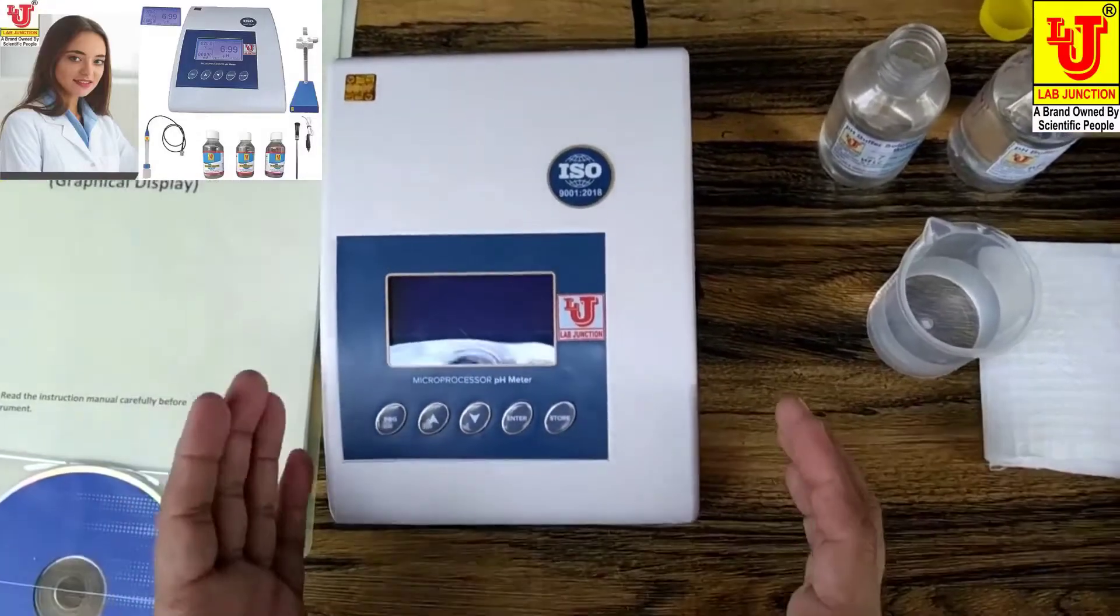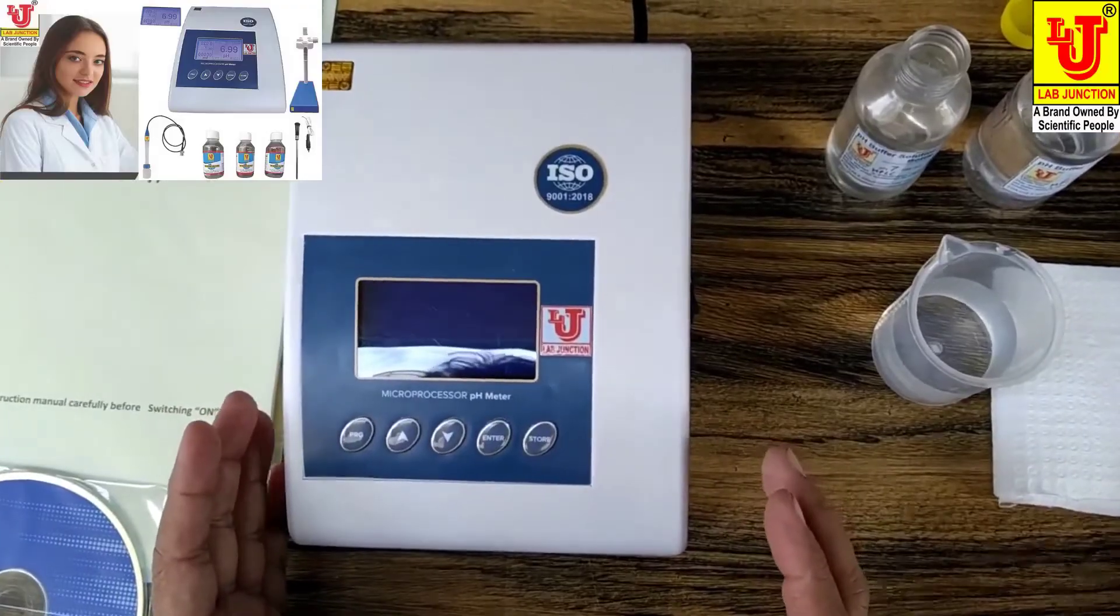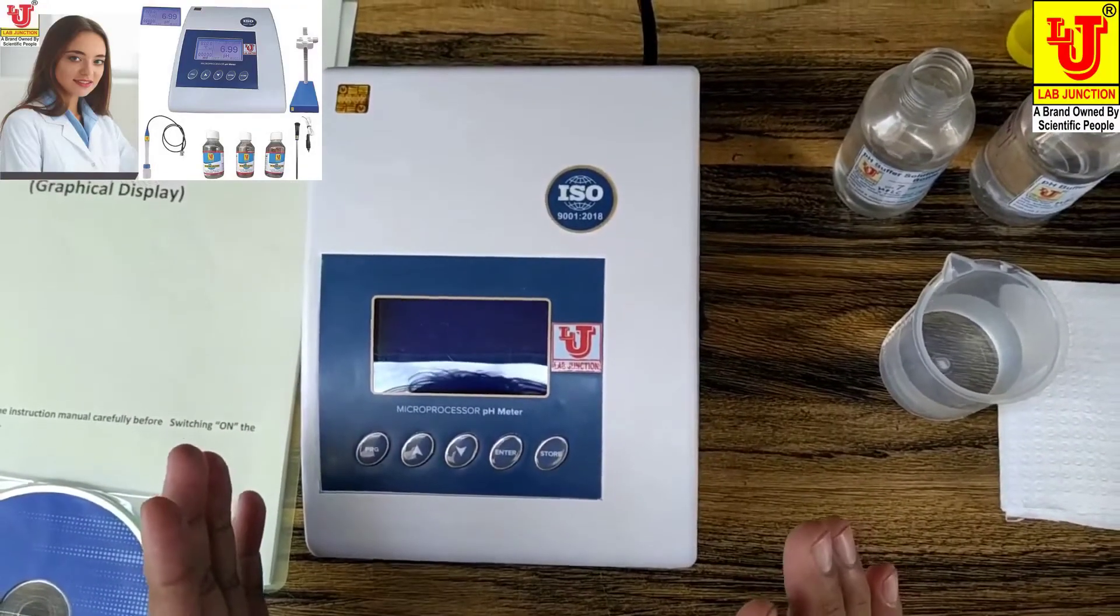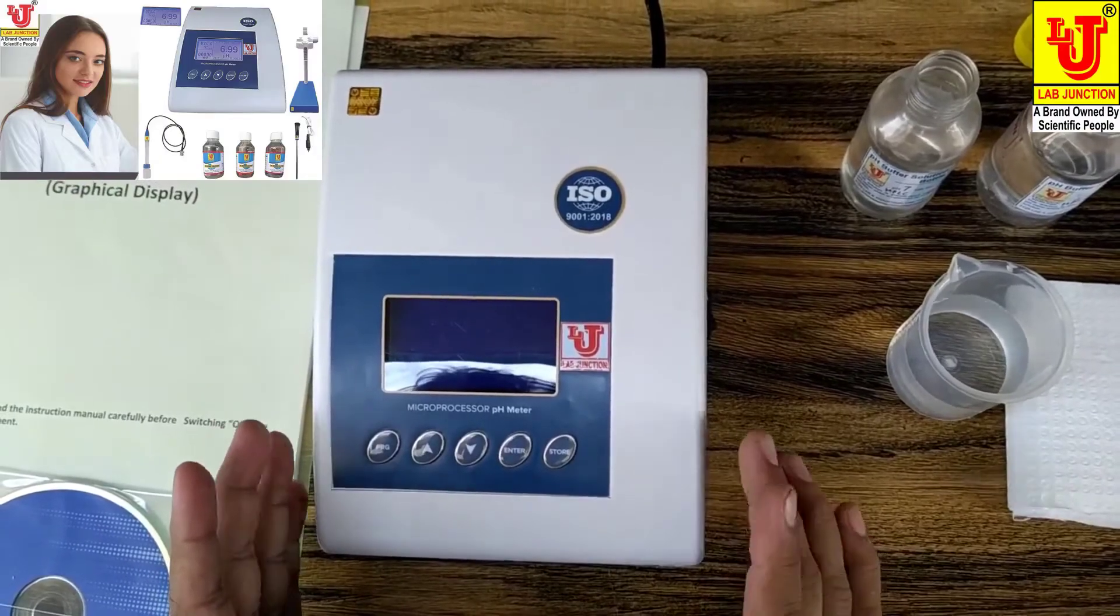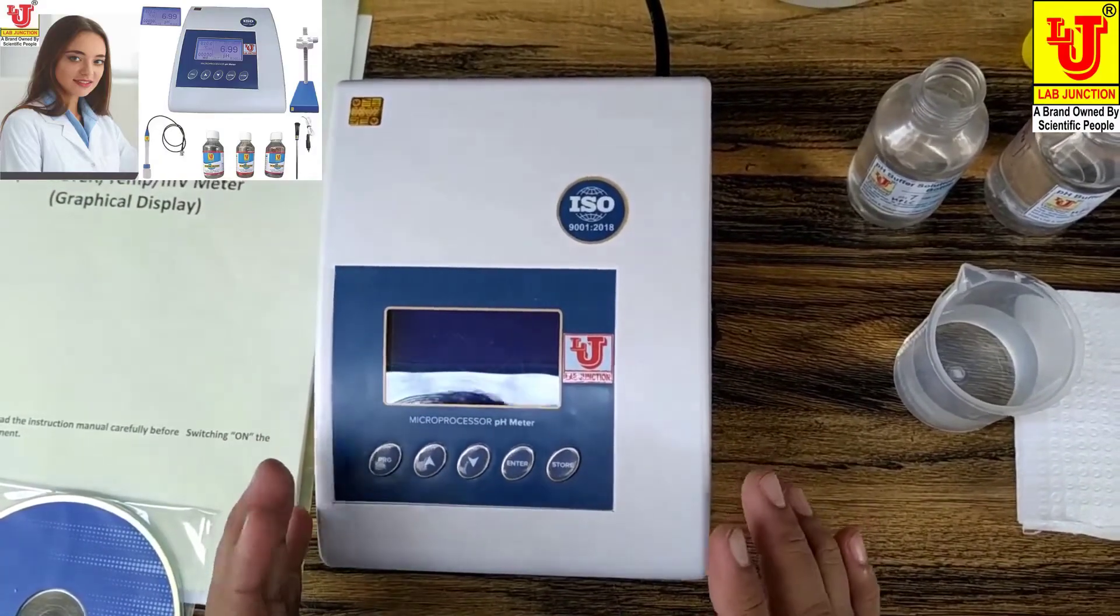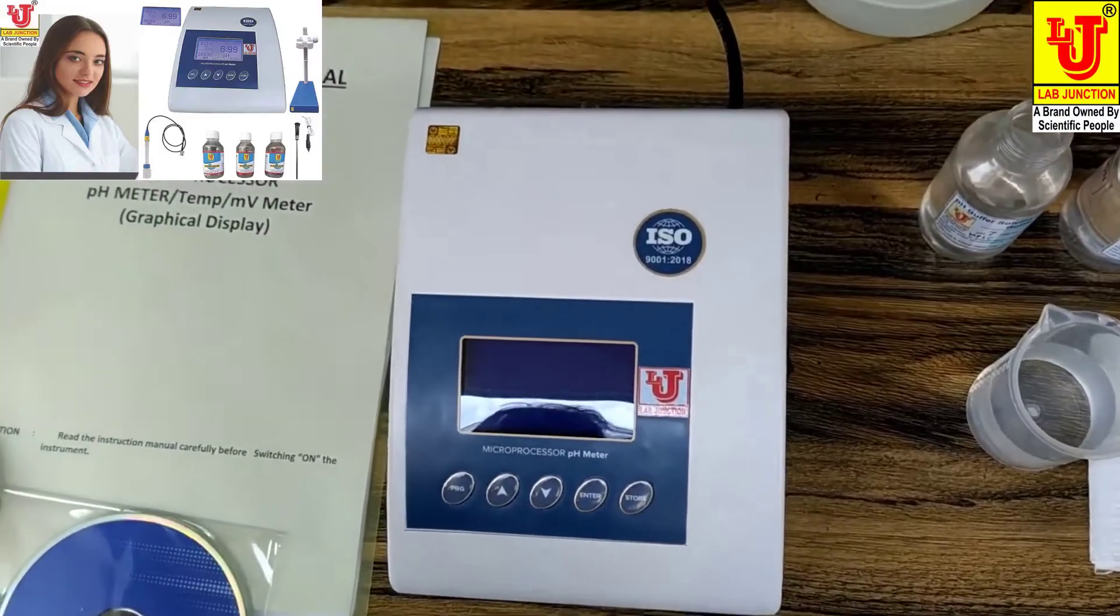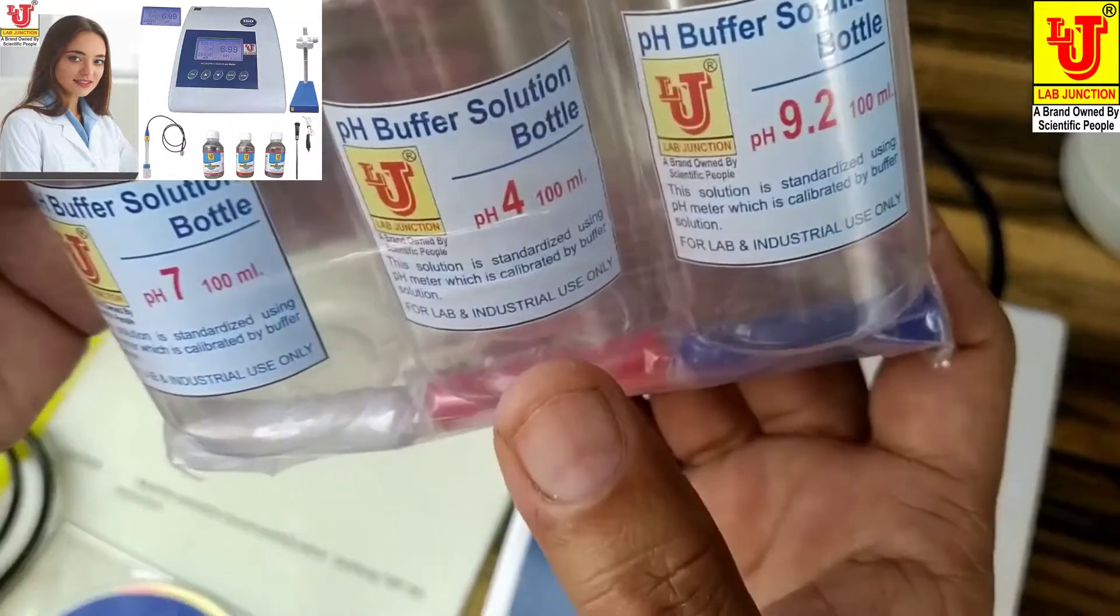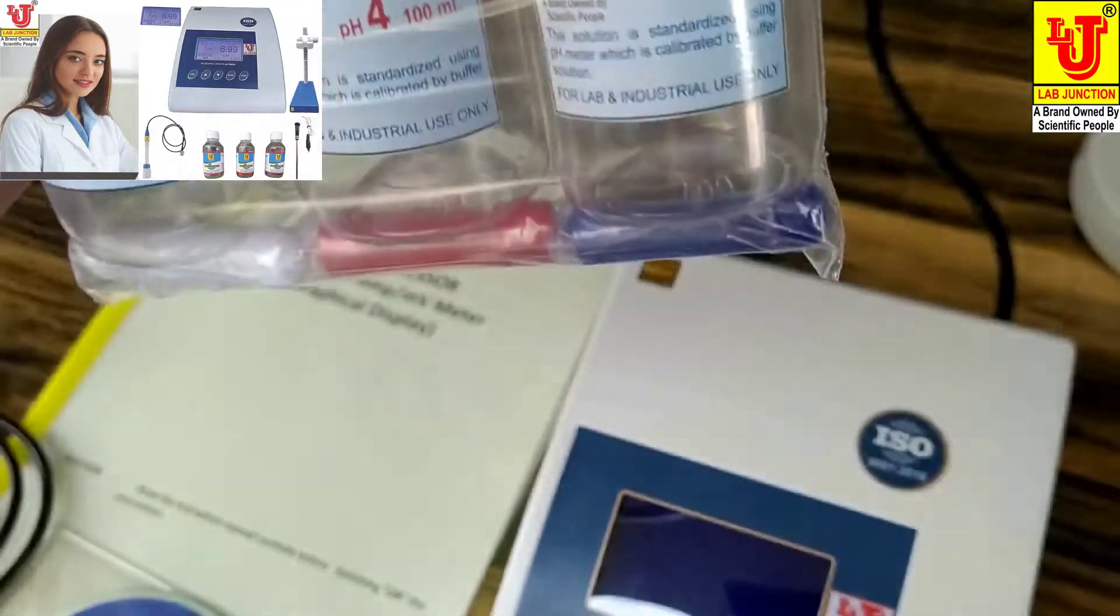Lab Junction's LJ1015 microprocessor pH meter. This pH meter includes accessories: three buffer bottles - 7 pH, 4 pH, and 9.2 pH.